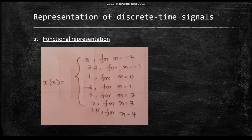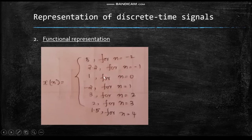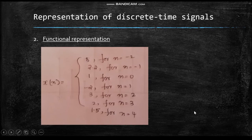Next is the functional representation. In functional representation, the values of x(n) are shown in a curly bracket: x(n) = 5 for n = −2, 2.2 for n = −1, 1 for n = 0, −2 for n = 1, 3 for n = 2, 2 for n = 3, and 1.5 for n = 4.